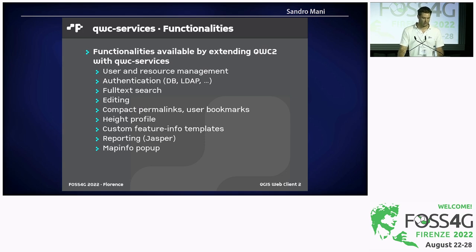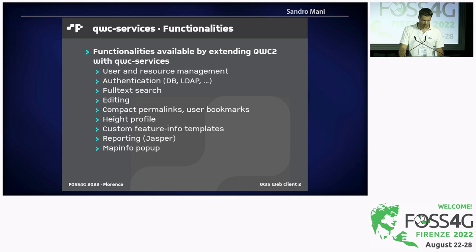The functionalities made available by extending the QGIS Web Client with QWC services include users and resources management and authentication. There's a possibility to have a full-text search engine, and editing possibilities to edit layers directly on the client. Compact permalinks and user bookmarks allow storing the state in a database. Height profile for the measurement tool lets you see the elevation profile under a drawn line. Custom feature info templates extend GetFeatureInfo to render into customized HTML templates. A reporting service based on Jasper, and a map info popup providing additional context information on right-click.